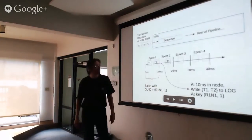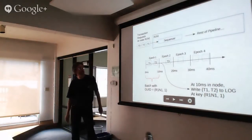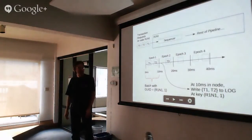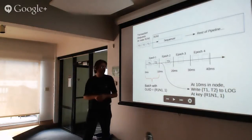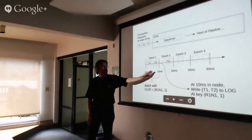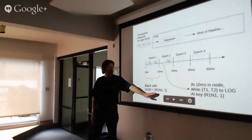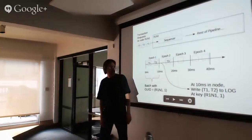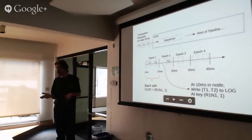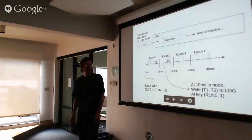Let's focus on just one node. Client-generated requests come into the sequencer, which has a clock. Every 10 milliseconds it chops up the incoming sequence of transactions and forms them into batches. Two transactions come in in the first 10 milliseconds — let's call that epoch 1 — and we assign a globally unique ID specifying the node and the epoch number. After the 10 milliseconds elapse, we write those two transactions to a log at that unique ID key.